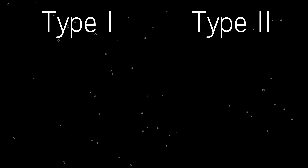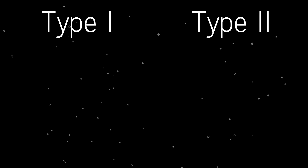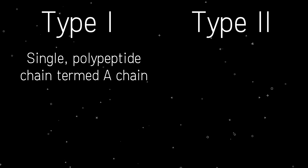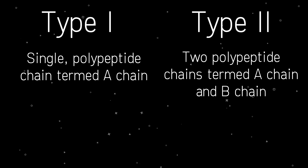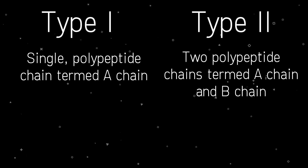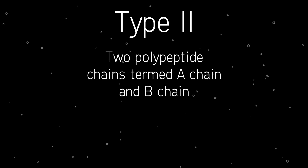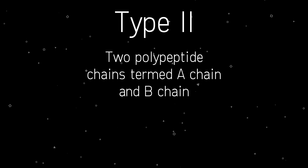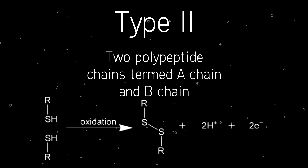RIPs are broken up into two classes: type 1 and type 2. Type 1 RIPs contain only a single polypeptide chain, termed the A-chain, while type 2 have a second chain known as the B-chain. These two chains, in type 2 RIPs, are linked via a disulfide bond.